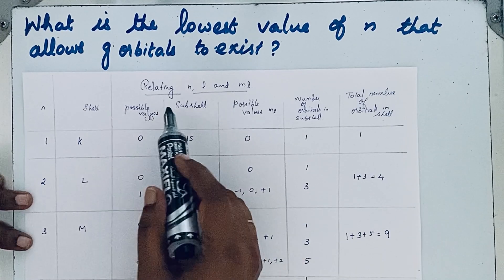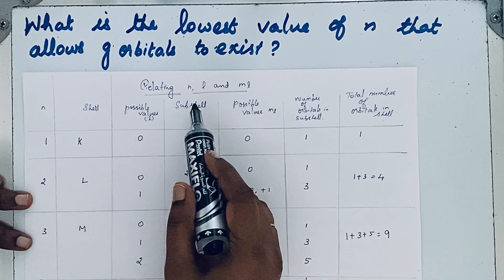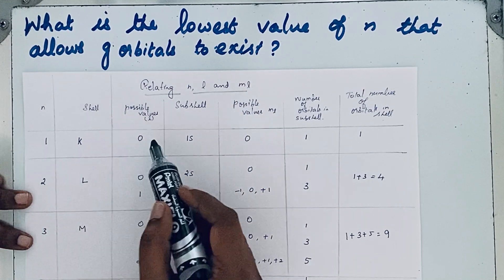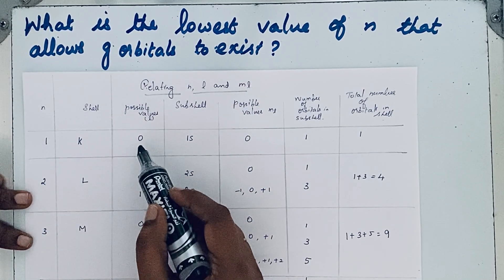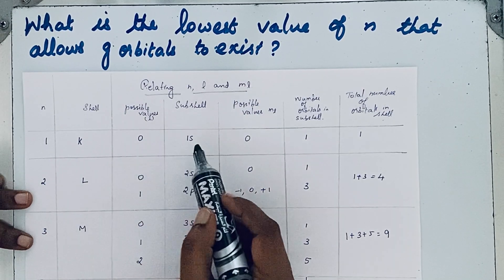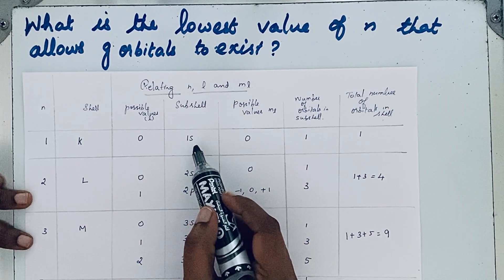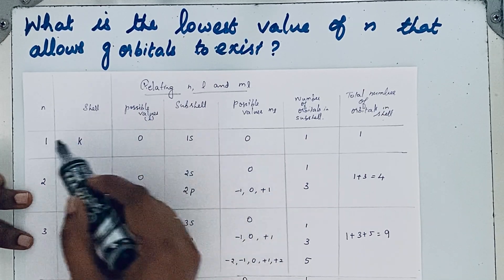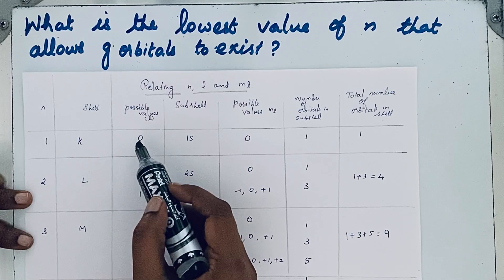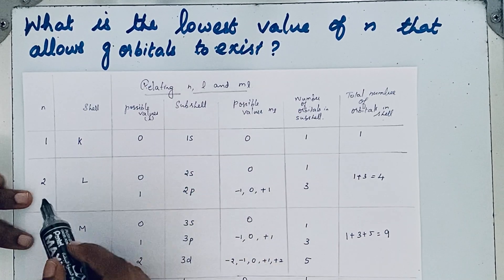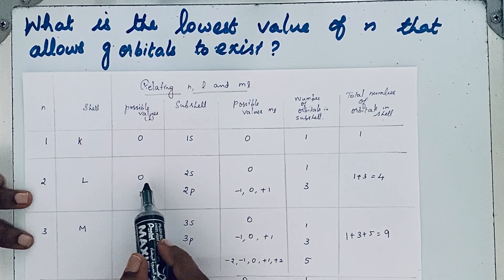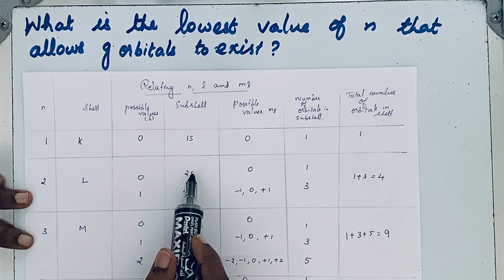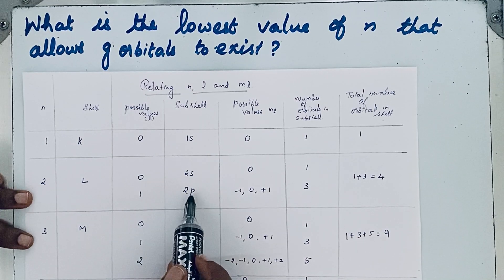Look at the table here. This shows the relation between n, l, and ml. If n is equal to 1, the possible value of l is 0, giving the 1s orbital. If n is equal to 2, there are two l values, 0 and 1, giving the 2s and 2p orbitals.